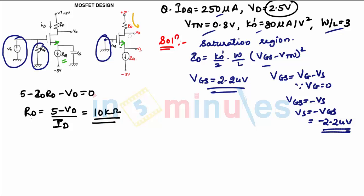For that we know VDS is VD minus VS. VD is 2.5, VS is minus 2.24. This will give you 4.74 volts.